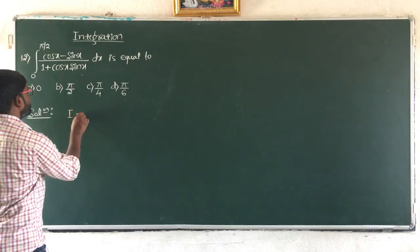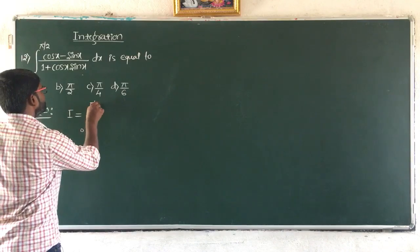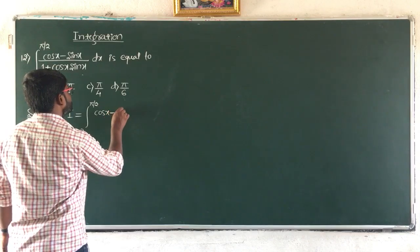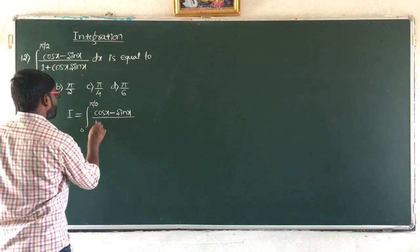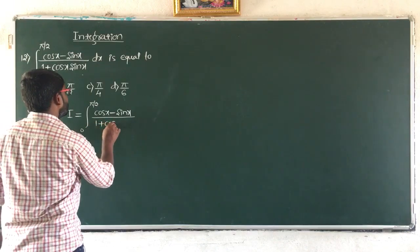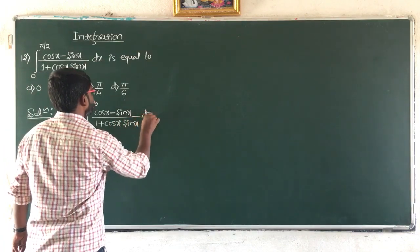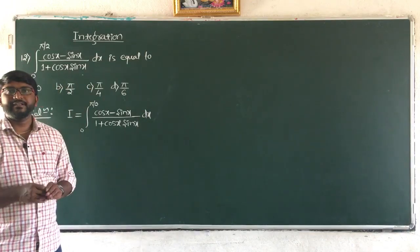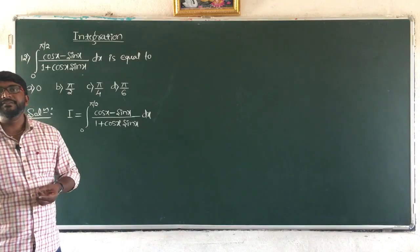Write the given integral: I equals integral from 0 to π/2 of (cos x minus sin x) divided by (1 plus cos x · sin x) dx. Now by making use of the property of definite integrals, integral from 0 to a of f(x) dx equals integral from 0 to a of f(a minus x) dx.